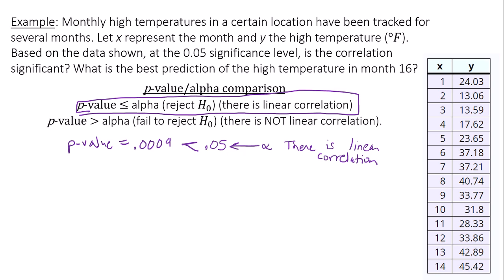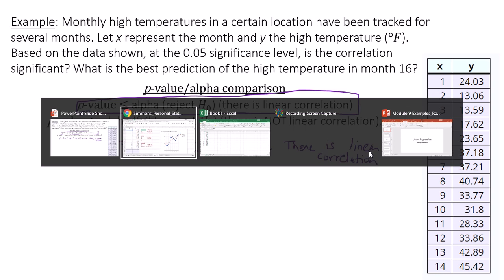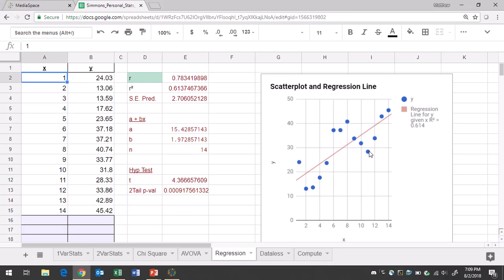So now I need to write a linear regression equation, which I can pull from Google Sheets as well. A and B are the two numbers you need for the equation. A is 15.43, B is about 1.97.